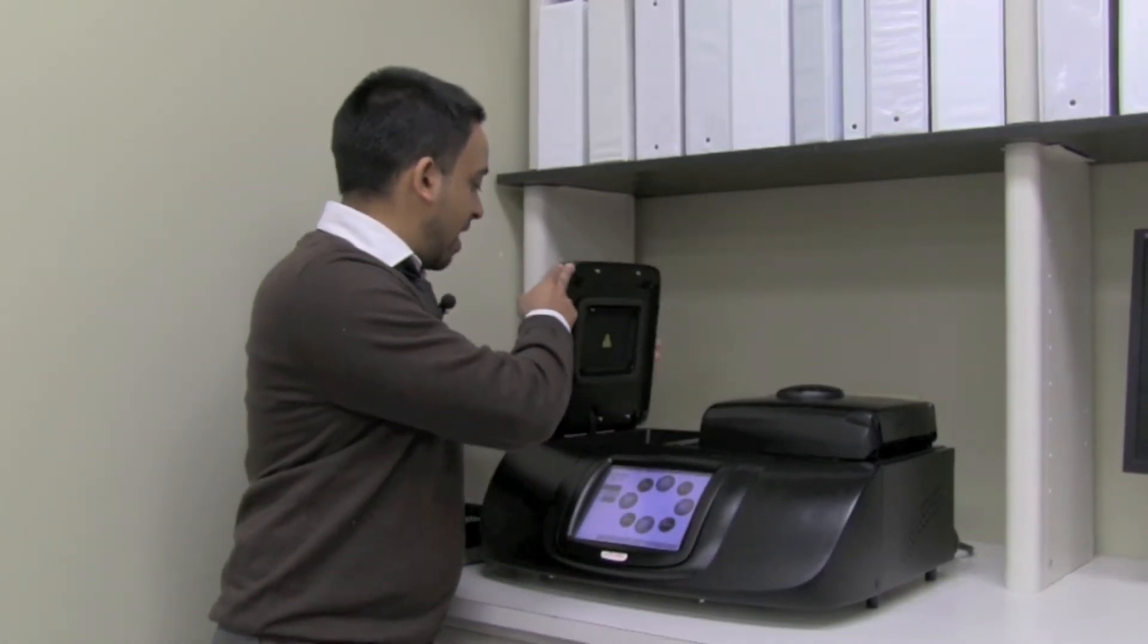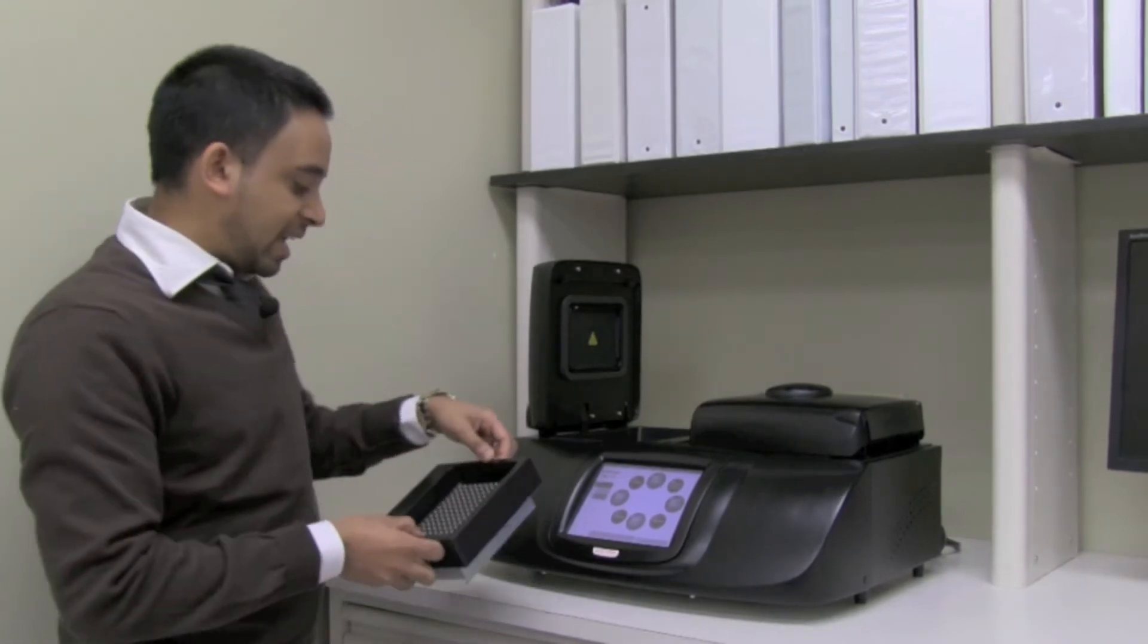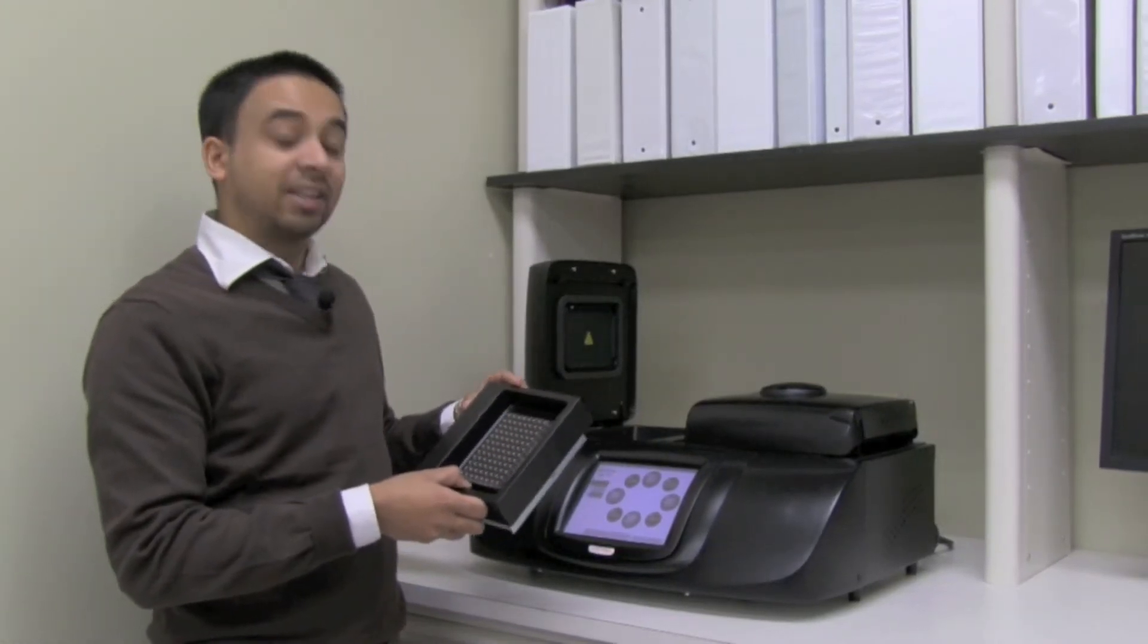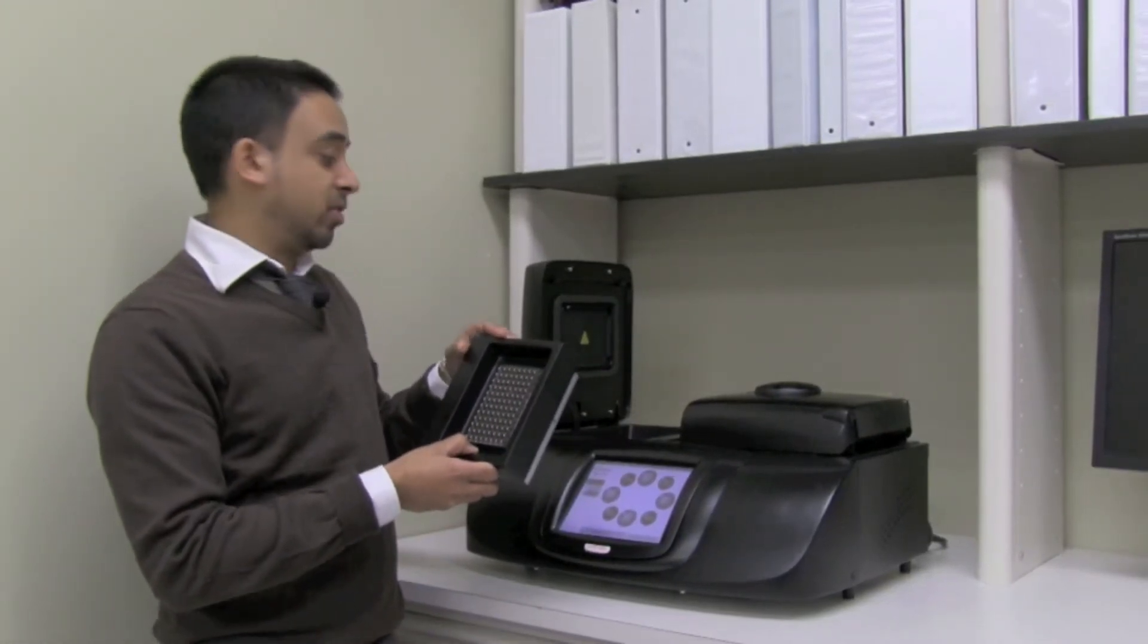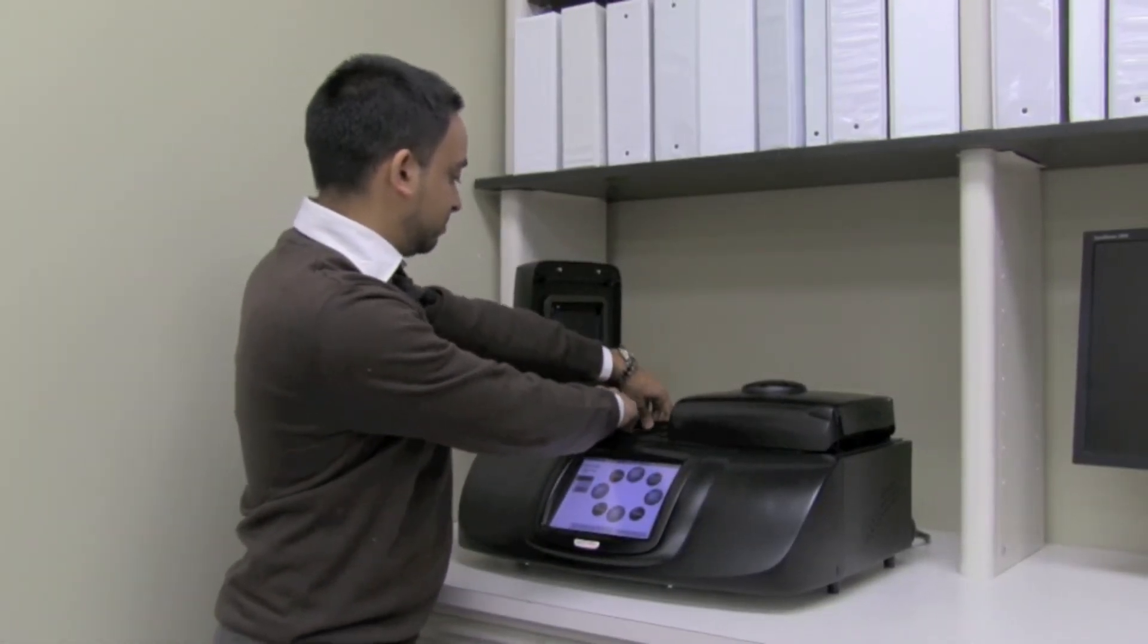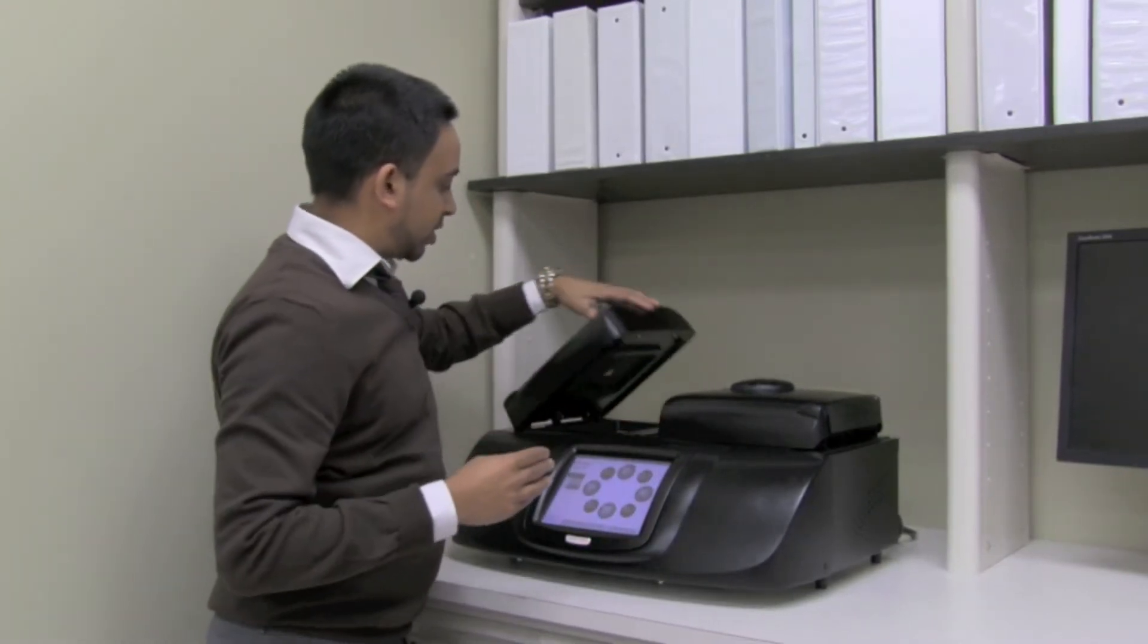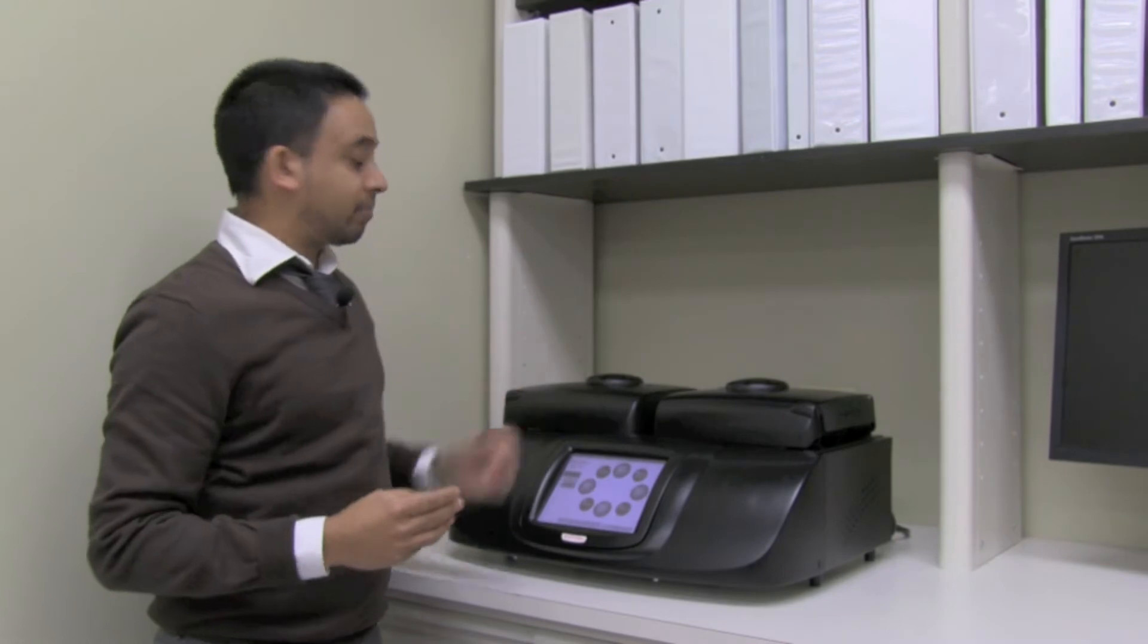This reduces mechanical wear and is obviously a lot simpler for you to use. I actually have with me the 96-well block for this unit. It inserts very easily. Simply place into place here and lock, then simply shut the lid to lock the unit. It's that simple.